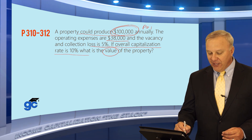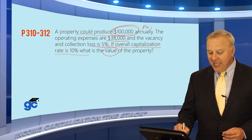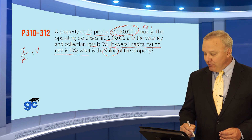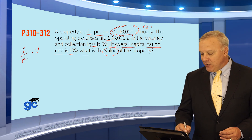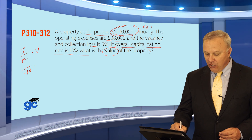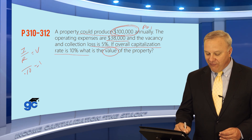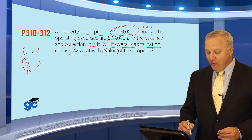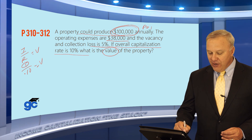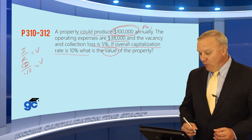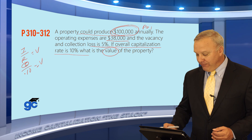This is going to be the IRV formula. The I is NOI divided by the cap rate, which gives us the value. In this case, we know the cap rate is 0.10, or 10%. We're asked to find the value, so what we need to do first is identify what that NOI, or net operating income, is. In order to do that, we would typically use the stack formula.